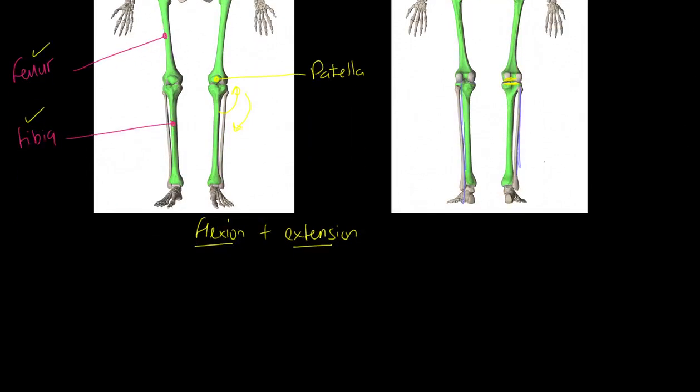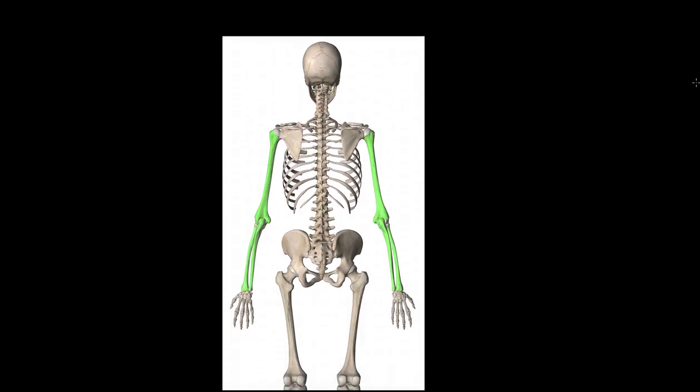Our other hinge joint is the elbow. Let me re-familiarize you with the elbow. The elbow has three articulating bones. Feel free to pause and figure out what these are. We have the humerus, nothing funny about that.